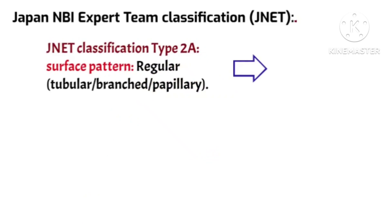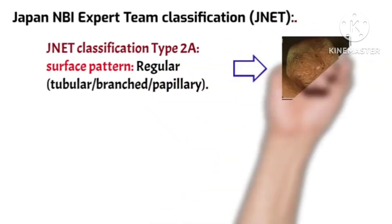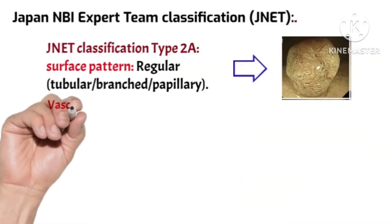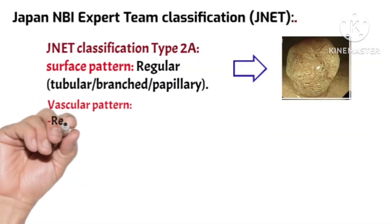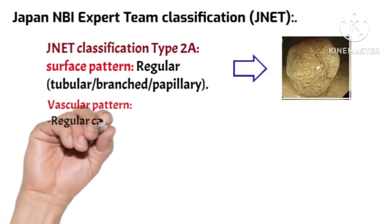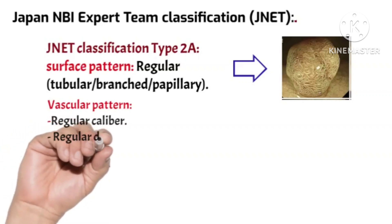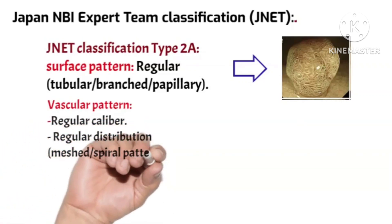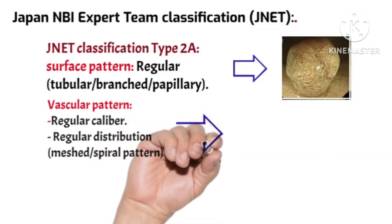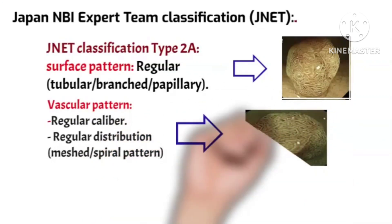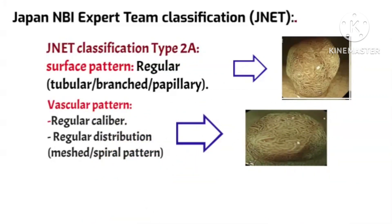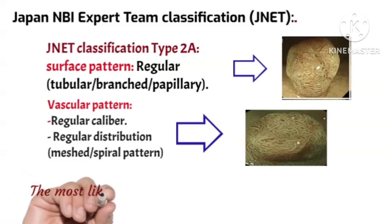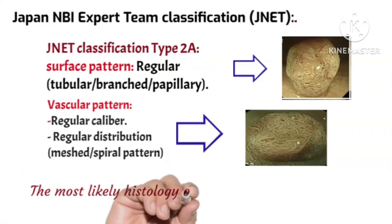JNET classification Type 2A shows a surface pattern that is regular — either tubular, branched, or papillary. The vascular pattern shows regular caliber and regular distribution of blood vessels with a meshed or spiral pattern. The most likely histology of this type is low-grade intramucosal neoplasia.